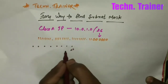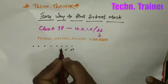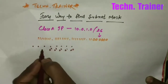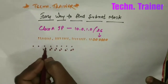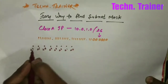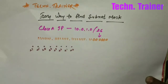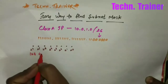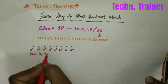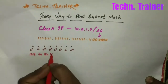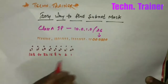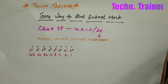Each bit's value is: 2 to the power 0, 2 to the power 1, 2 to the power 2, 2 to the power 3, 2 to the power 4, 2 to the power 5, 2 to the power 6, 2 to the power 7. And the values are 1, 2, 4, 8, 16, 32, 64, 128.